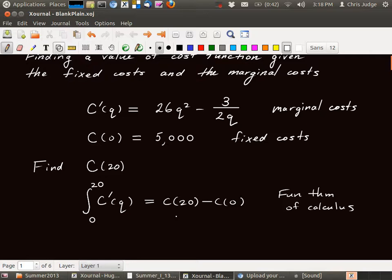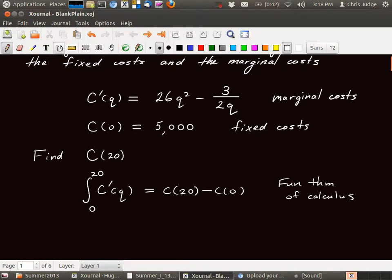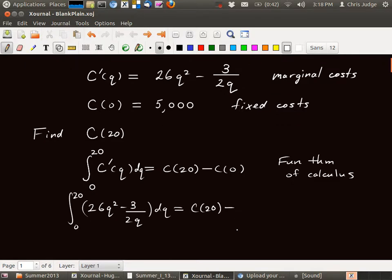Okay, so the difference between C of 20 and C of 0, that's the integral of C prime of Q. Well, we know C prime of Q, that's 26Q squared minus 3 over 2Q, we integrate DQ between 0 and 20. That's going to be equal to C of 20, which we don't know, but we hope to find. And then we have C of 0, which was 5,000.